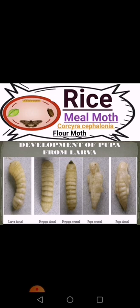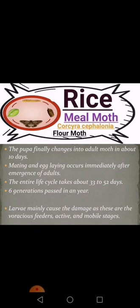Here are the developmental forms of pupa from larva — larval dorsal, prepupal dorsal, pupal dorsal, and pupal ventral stages are shown. The pupa finally changes into the adult in about 10 days. Mating and egg-laying occur immediately after emergence of adults. The entire life cycle takes about 33 to 52 days, with 6 generations passed in one year.